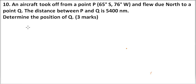Question number 10. We are told an aircraft took off from point P at 65 degrees south, 76 degrees west, and flew due north to a point Q. The distance between P and Q is 5400 nautical miles. Determine the position of Q.